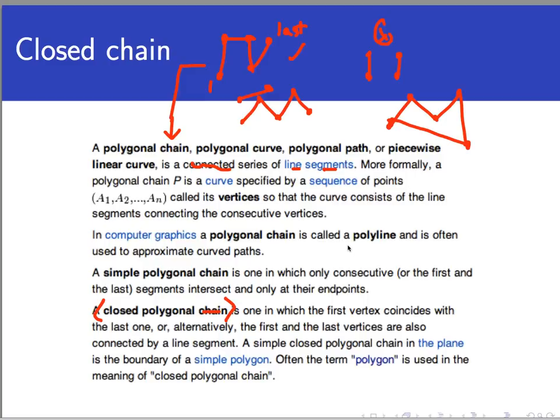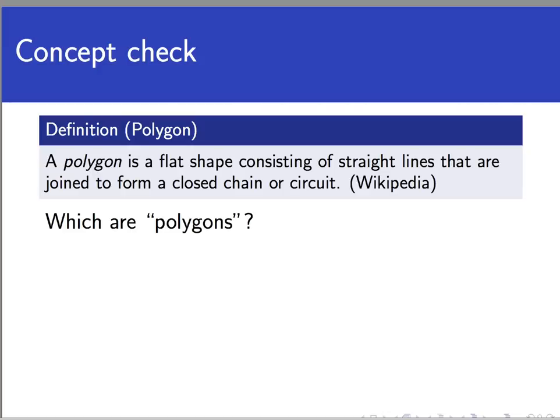So now we understand the three major portions of the definition of polygon: flat, straight, and closed. So let's move on to a little concept check here. And this is something I'm going to give you, although in practice you would be doing this yourself. And there are some figures here, six figures I'm going to draw. And I want you to determine whether these are polygons or not.